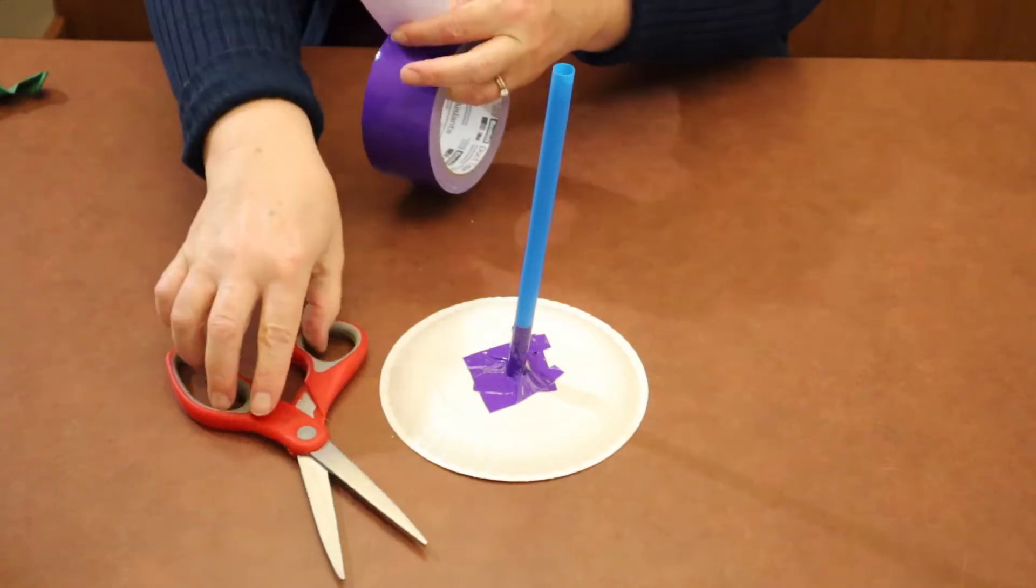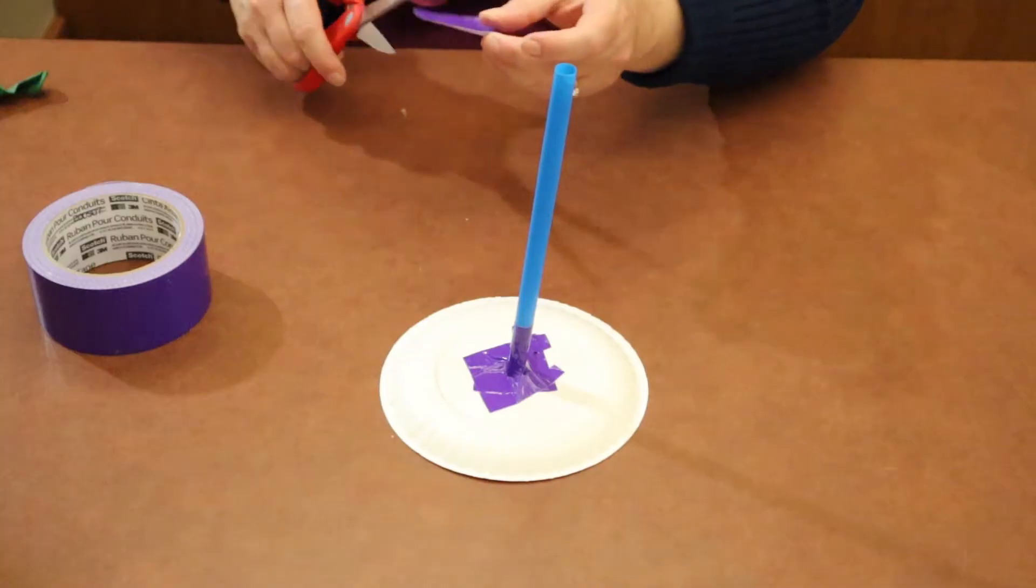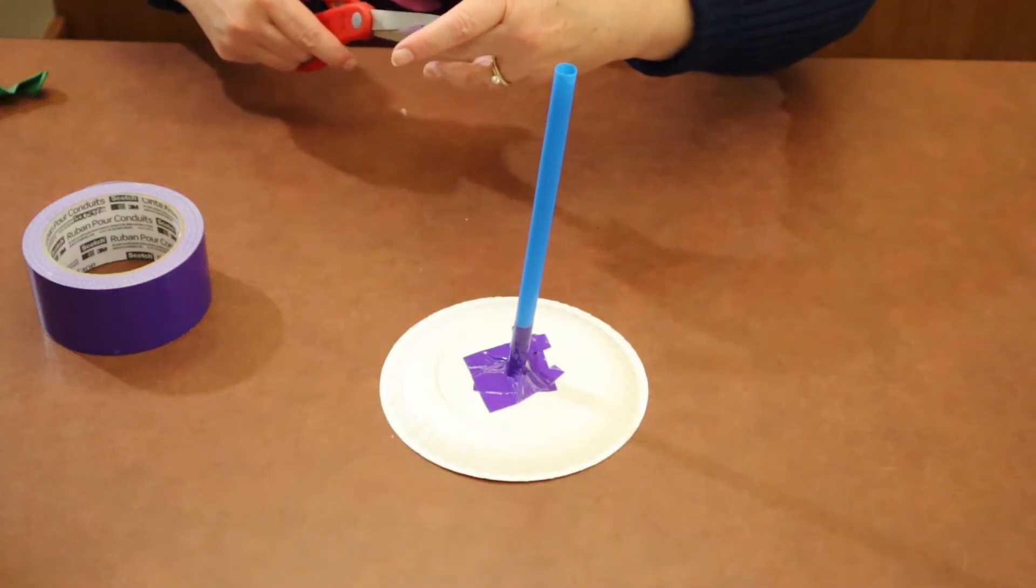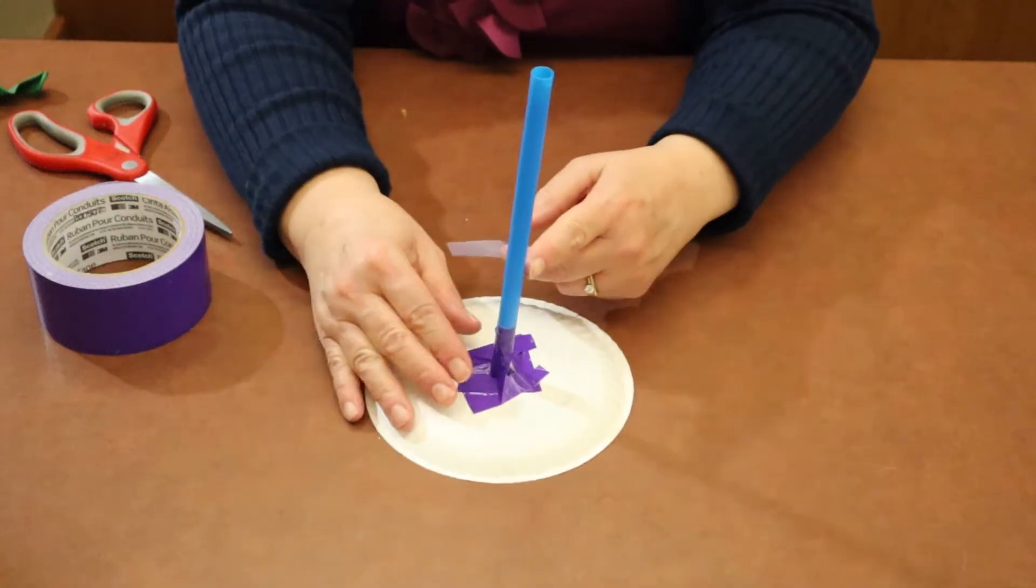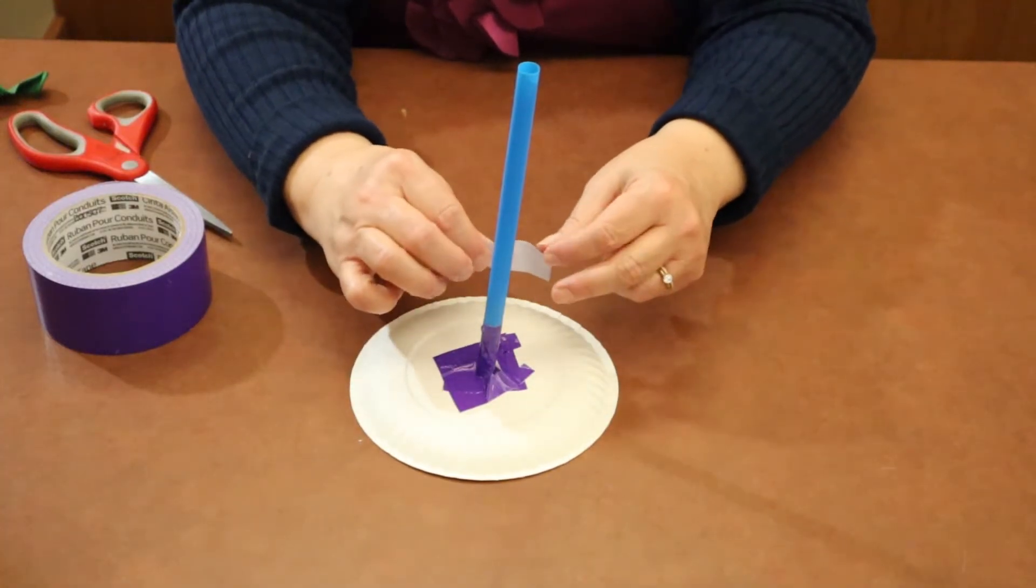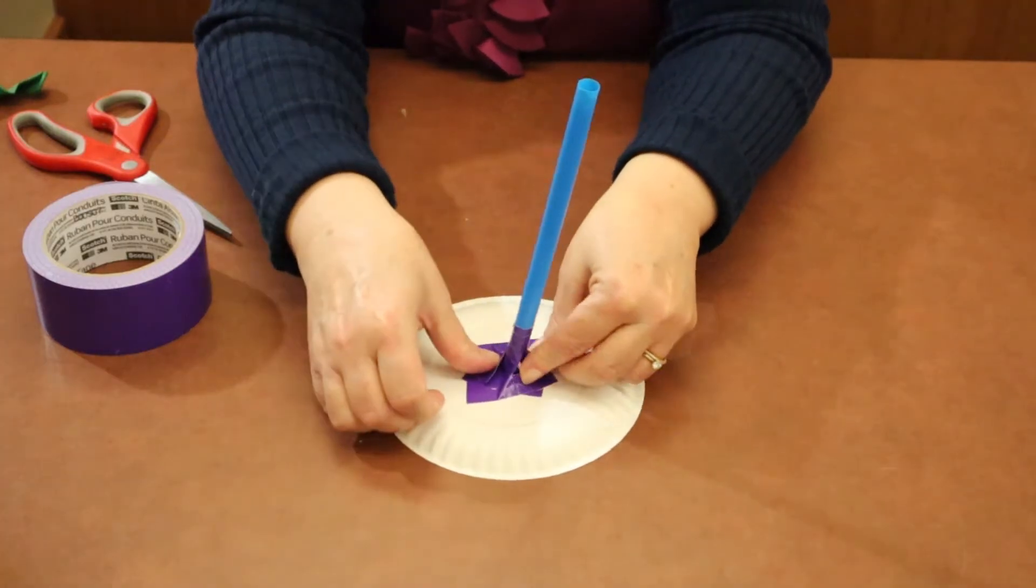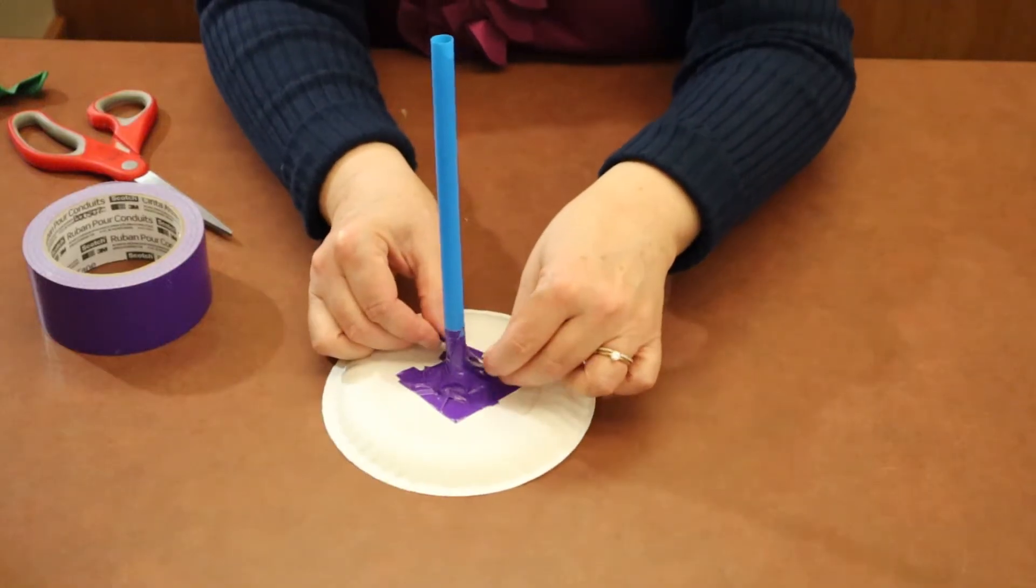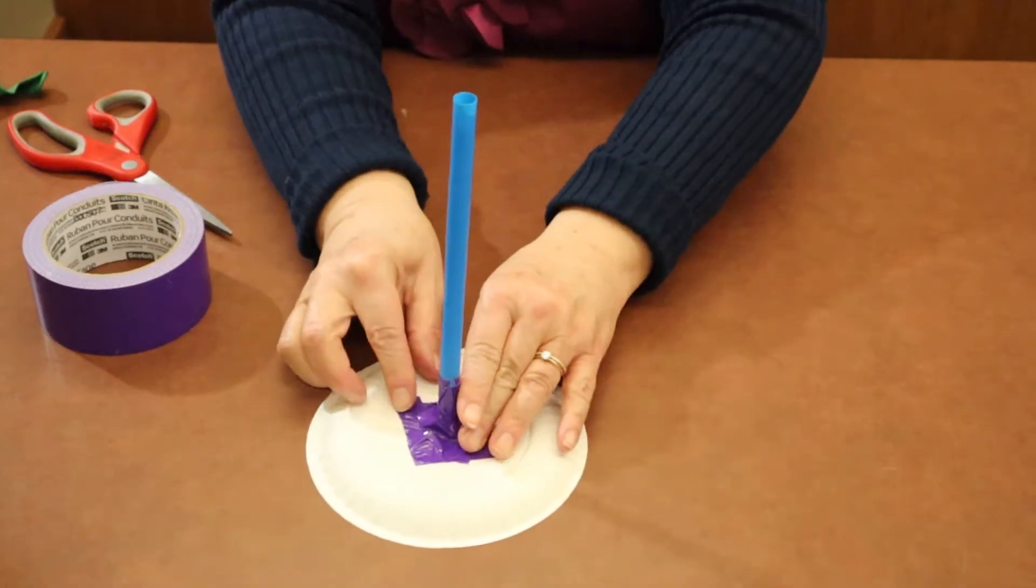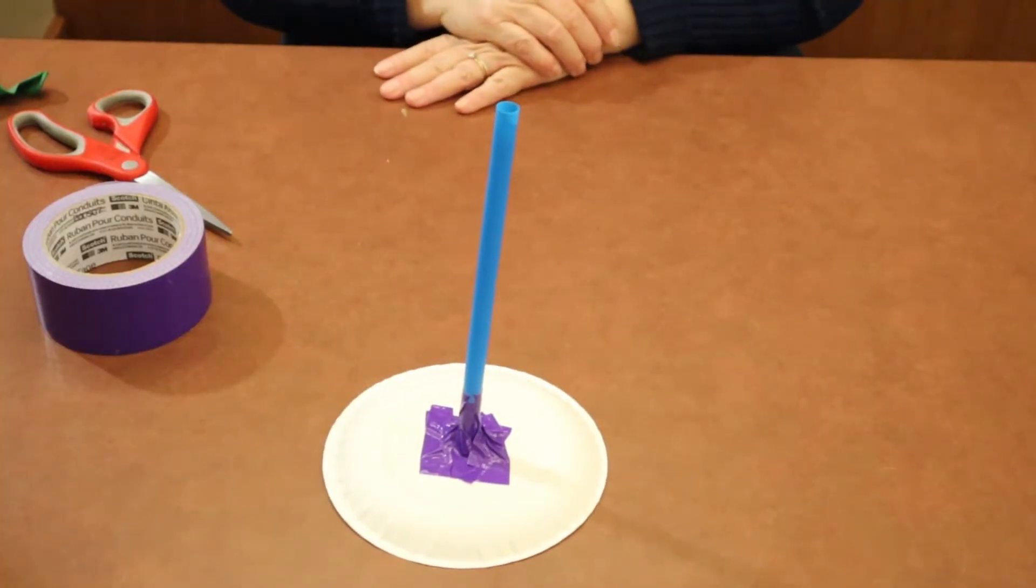Just keep putting duct tape until you feel comfortable that your straw is attached. Keep in mind that the more duct tape you add to the top of your plate, the more weight you're adding, and that might affect the outcome of your project. But if you see any little holes, feel free to put some duct tape on there.